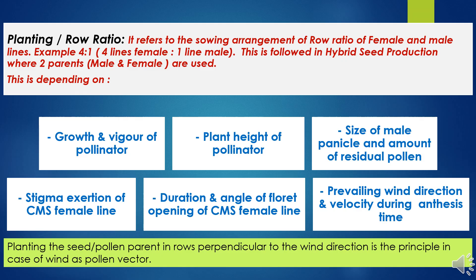In hybrid seed production, planting ratio or row ratio is very important to maintain the optimum plant population of male and female parents. There should be sufficient population of female plants to get the desired yield, as these are the seed parents from which we harvest the produce. Planting ratio refers to the sowing arrangement or row ratio of female and male lines. In wind-pollinated crops like maize, sorghum, and pearl millet, a male-to-female row ratio is used, while in crops like cotton and sunflower, parents are grown in block arrangements.